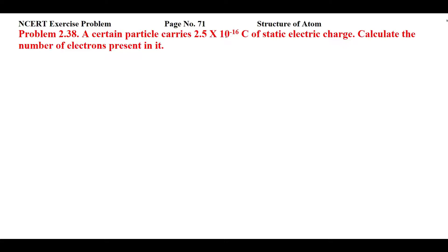In this question, a certain particle carries a static electric charge of 2.5 × 10⁻¹⁶ coulomb. Static electric charge is a charge present due to an imbalance between negative and positive charges in an object. We have to find the number of electrons present in it due to which this static electric charge is held.